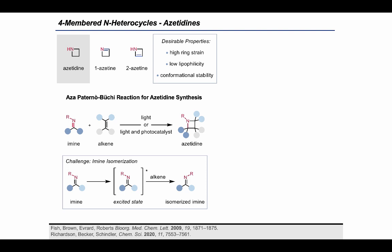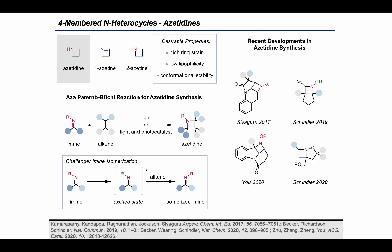2+2 cycloadditions are arguably the most efficient method to access four-membered rings in terms of atom economy. The aza-Paternò-Büchi reaction is the light-mediated 2+2 cycloaddition of imines and alkenes. However, historically this methodology has been limited by the challenge of imine isomerization, where imines in their excited state preferentially relax by isomerization rather than interacting productively with the alkene. In the last five years there have been huge advancements in this field using triplet energy transfer photocatalysis, resulting in new methods to synthesize a variety of different azetidine compounds.